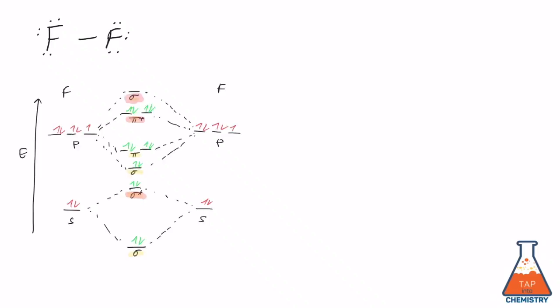And this is the MO diagram that we constructed together. The bonding orbitals are highlighted in yellow and the antibonding orbitals are highlighted red.